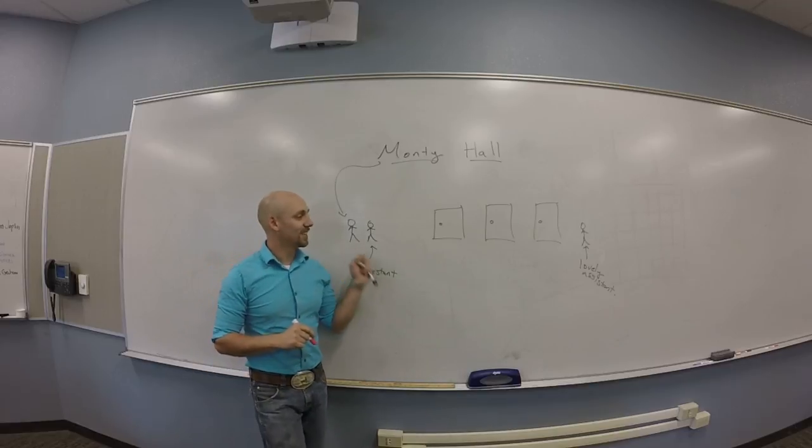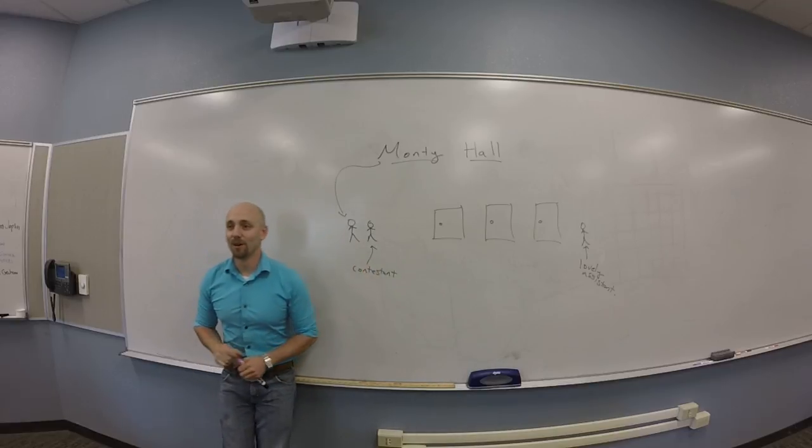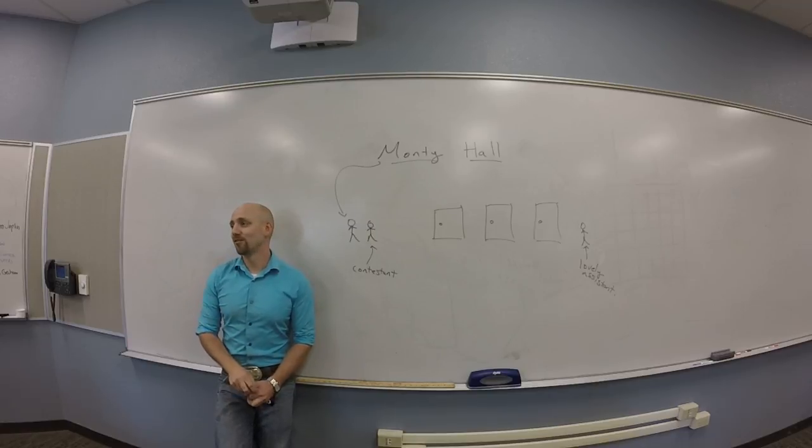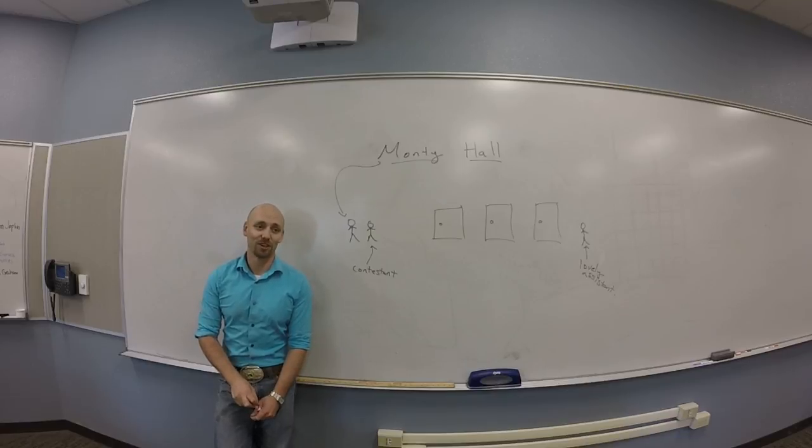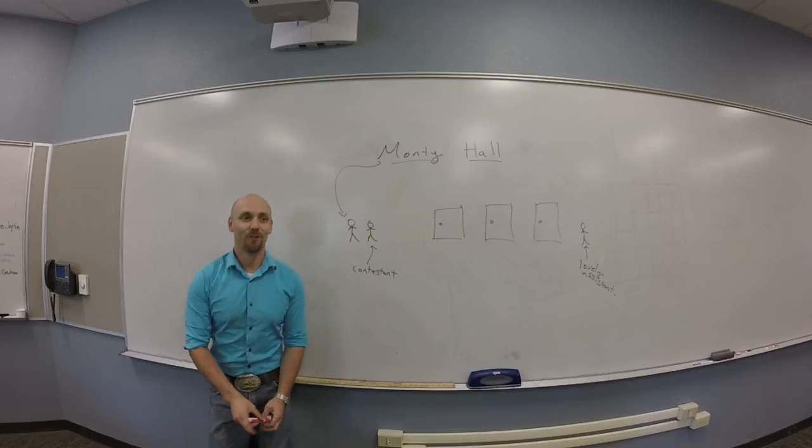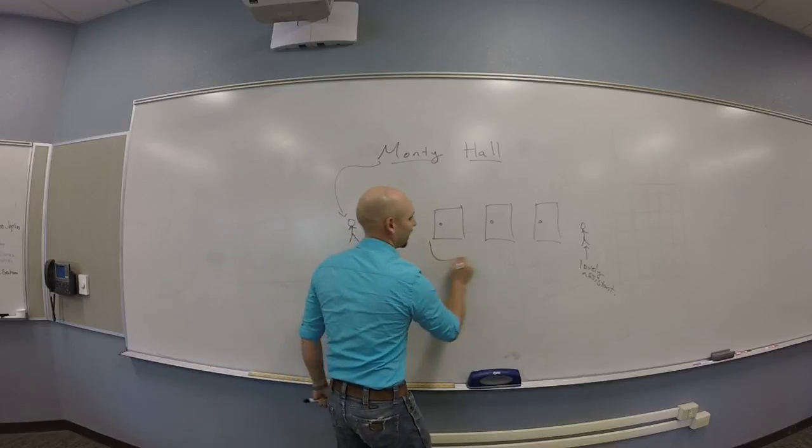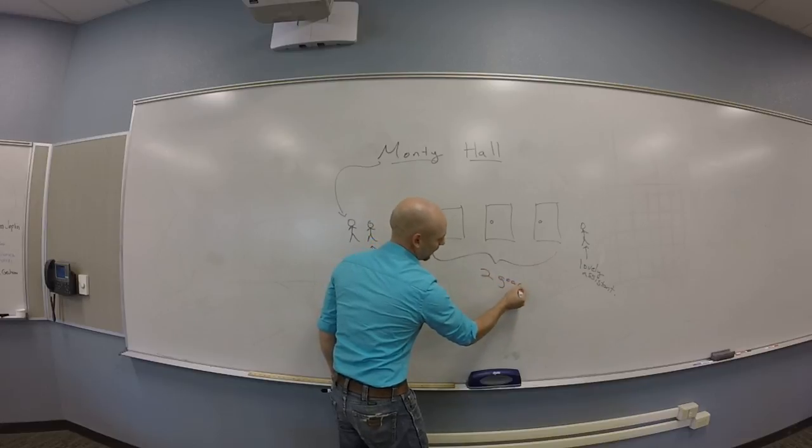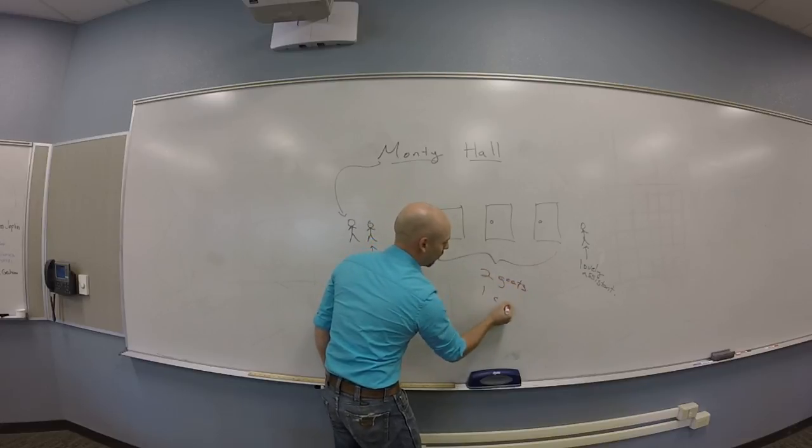Monty says to the contestant, there are three doors. You're going to get to pick one. Behind two of the three doors is a goat, and behind the third door is a car. Over here, we know that behind the doors, there are two goats and one car.